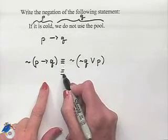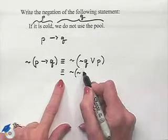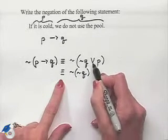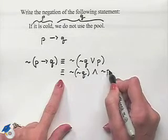Next, we can use De Morgan's Laws and take the negation of not Q, change the disjunction to a conjunction, and take the negation of P.